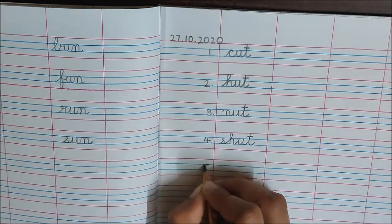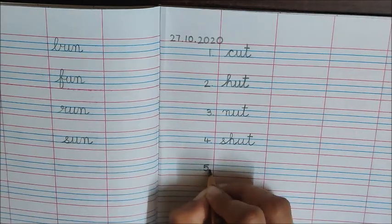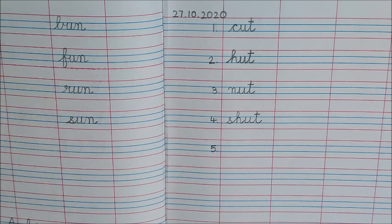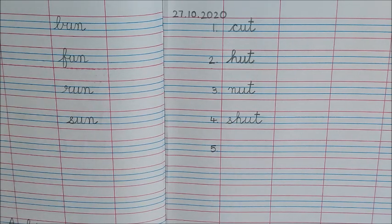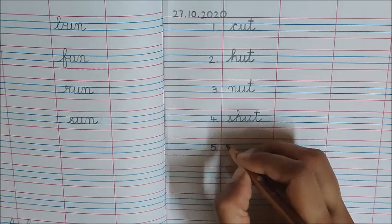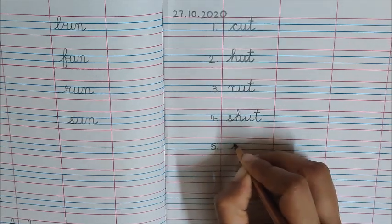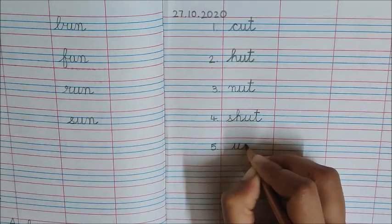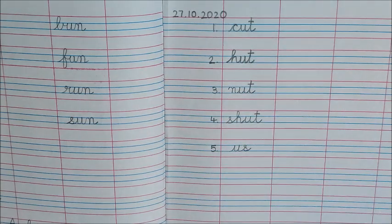Now write down five dot. Your next word is us. Think of the sounds and write the word us. I am waiting. Have you written? Good. I am also writing now: er, ser, us.